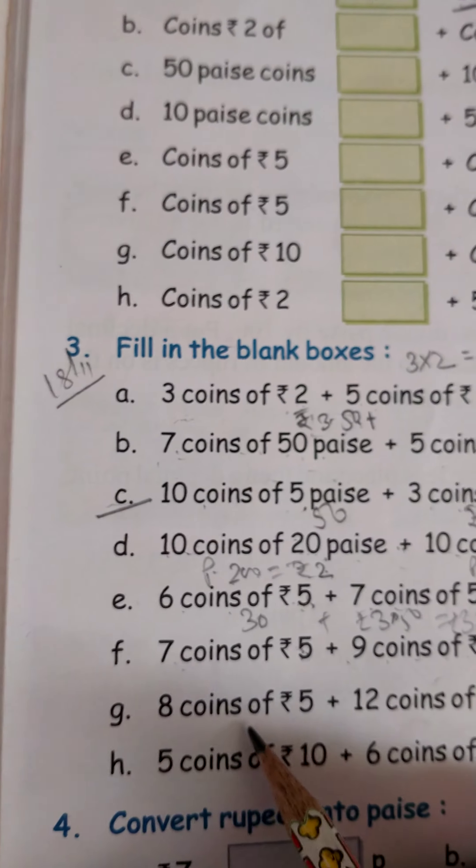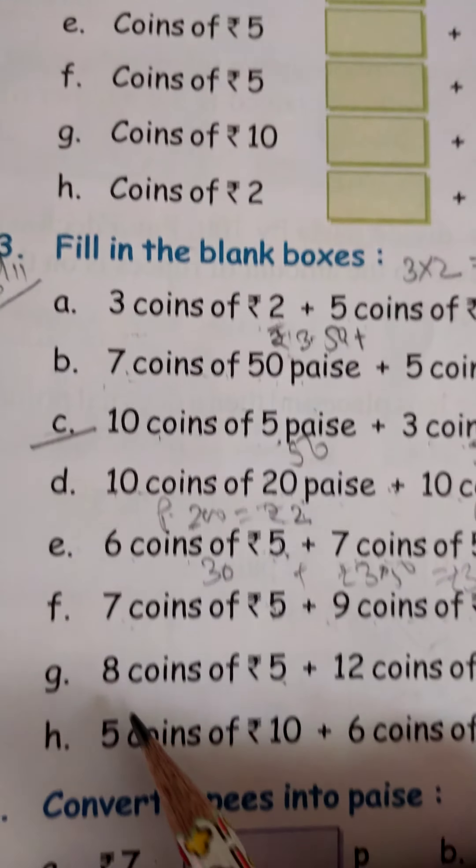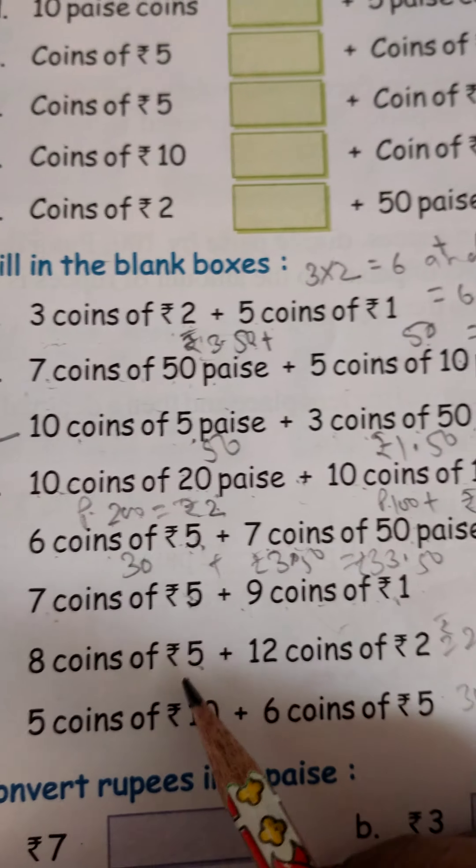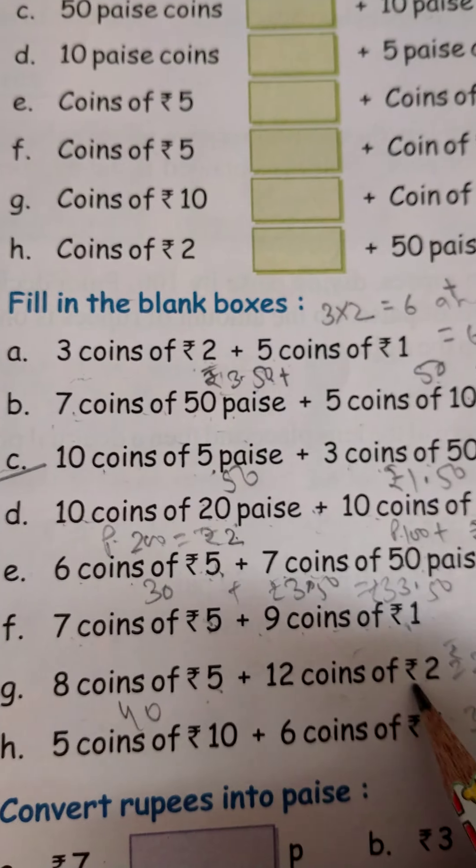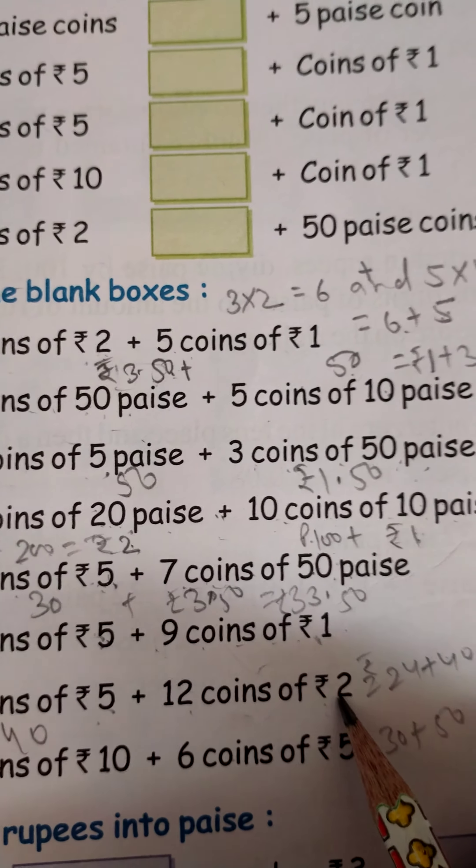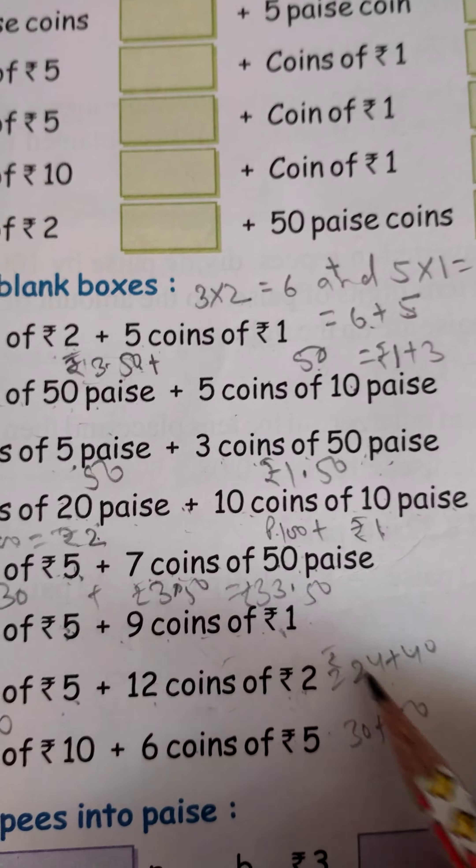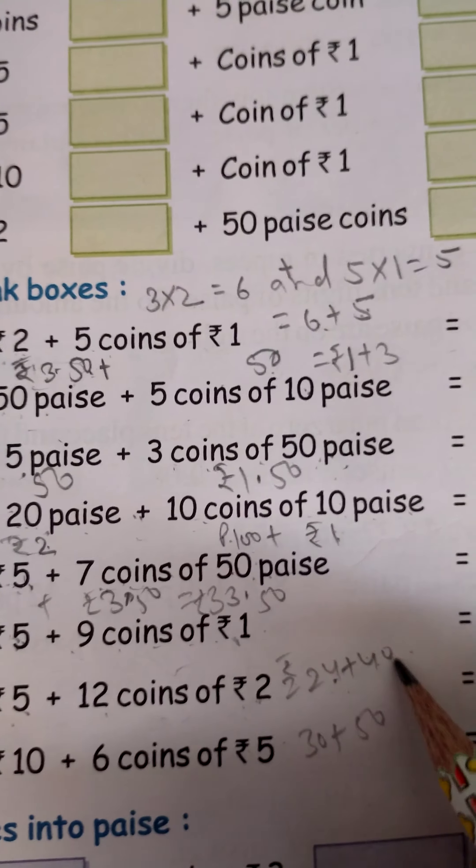Next question: 8 coins of rupees 5, which is 8 coins of 5 rupees, that's 40 rupees. And 12 coins of 2 rupees, so 12 into 2 is equal to 24. So 20 rupees plus 40 equals rupees 64.